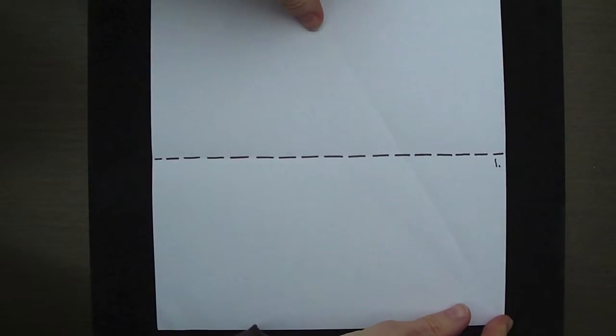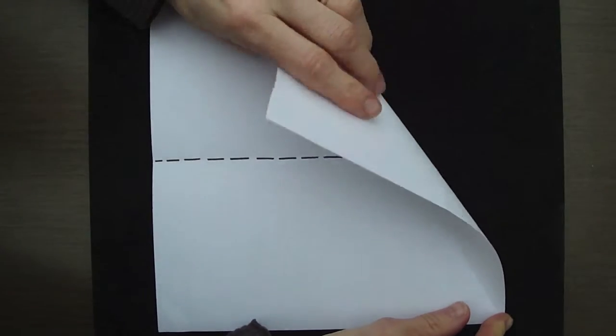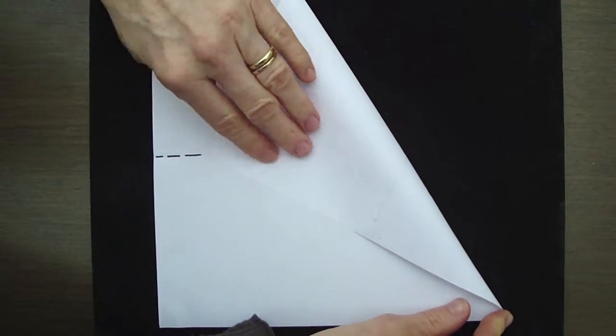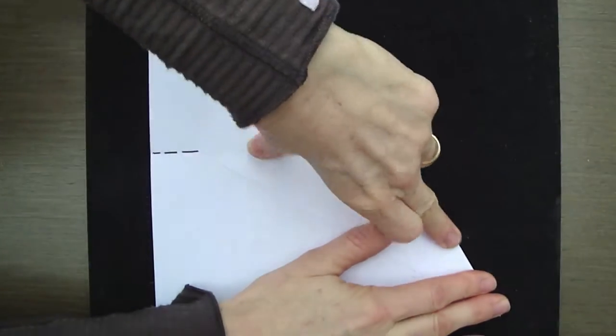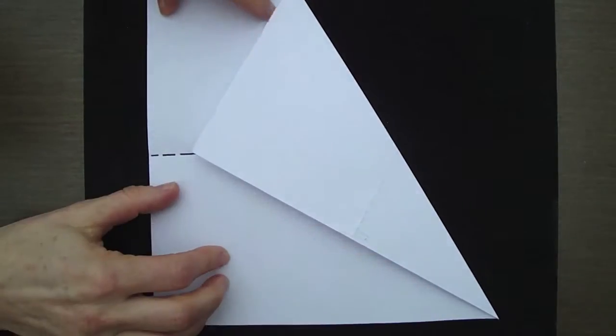Now fold the top right hand corner towards the middle line, making sure that you've got a nice point in the bottom right hand corner and then make a line along the crease. Let's show you that again.